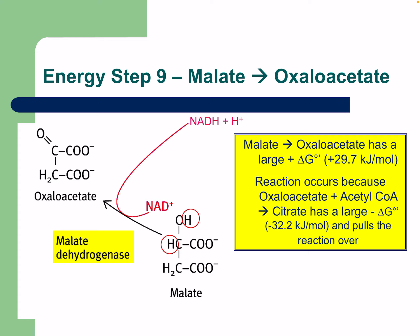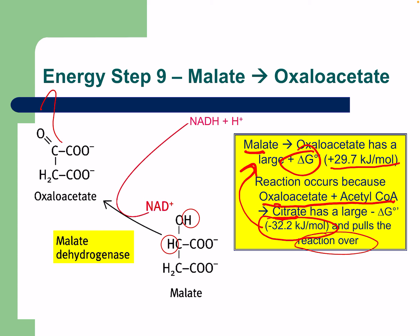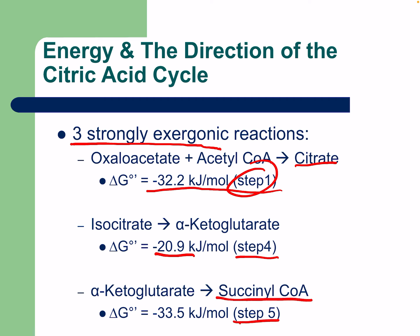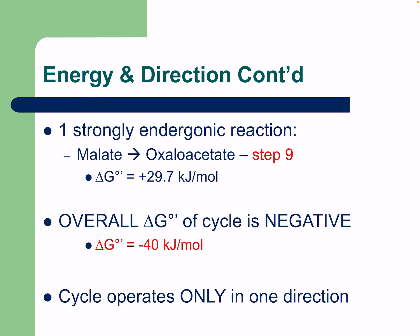The energy step from malate to oxaloacetate has a large positive Gibbs standard free energy of around +29 kJ/mol. This reaction still occurs because oxaloacetate and acetyl-CoA then form citrate, which has a large negative free energy that pulls the reaction forward. Regarding energy across the cycle, three strongly exergonic reactions drive it: oxaloacetate + acetyl-CoA → citrate (step 1, large negative ΔG), isocitrate → alpha-ketoglutarate (step 4, −20), and alpha-ketoglutarate → succinyl-CoA (step 5, −33), which drags other steps forward.